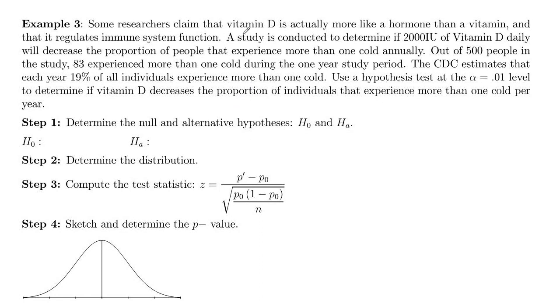Some researchers claim that vitamin D is actually not a vitamin, but more like a hormone, and that it regulates immune system function. A study was conducted to determine if 2,000 IUs of vitamin D daily would decrease the proportion of people that experience more than one cold annually.